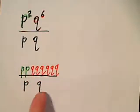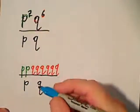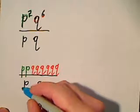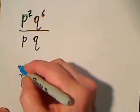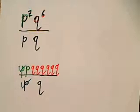we can cancel by a common factor. So P goes into P once, P goes into P once, and we could say that